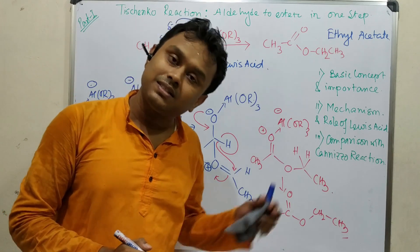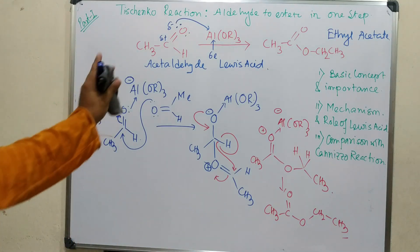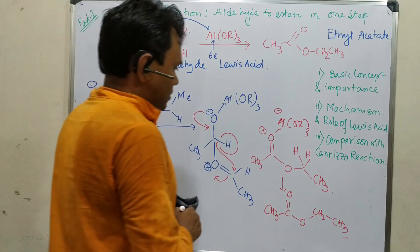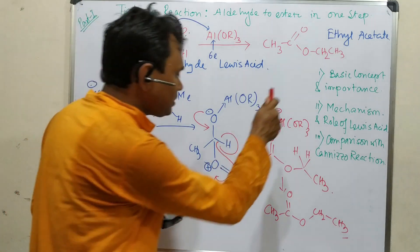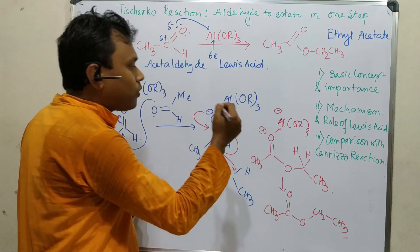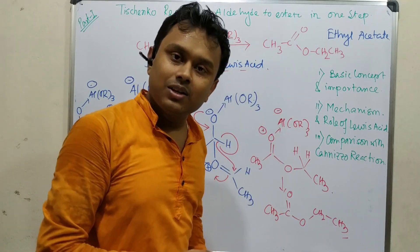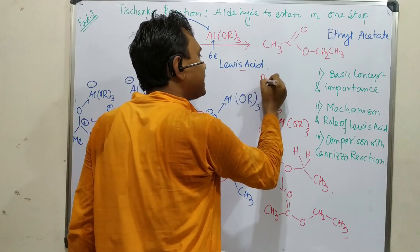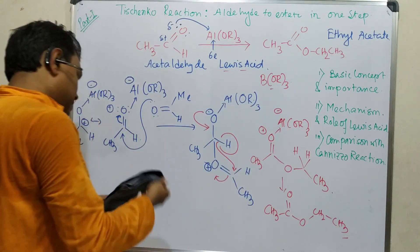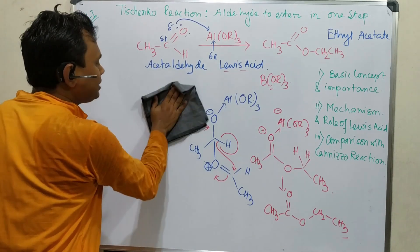I have used acetaldehyde as the example because it is the standard example cited for this reaction. Regarding the Lewis acid: aluminum alkoxide is used here, but it is also possible to use boric acid or a boron-based Lewis acid, because boron and aluminum are in the same group of the periodic table and are both electron deficient.